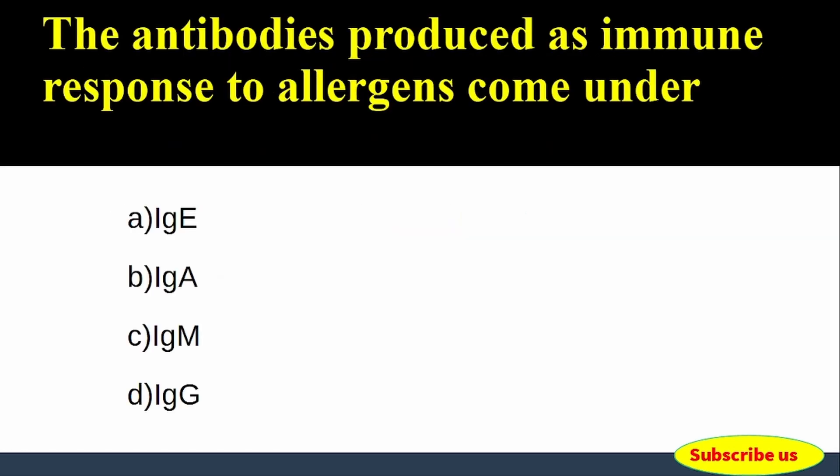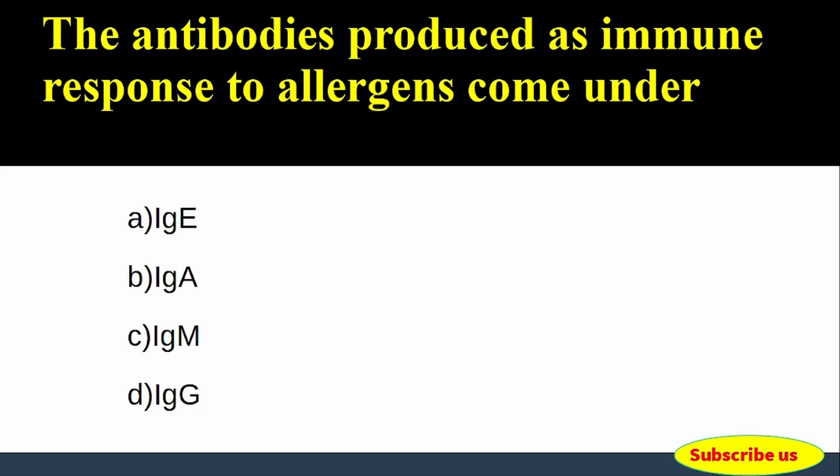Next question: The antibodies produced as an immune response to allergens come under which class? Options: A) IgE, B) IgA, C) IgM, D) IgG. Correct answer: Option A, IgE or Immunoglobulin E. The antibodies produced as an immune response to allergens come under IgE (Immunoglobulin E).